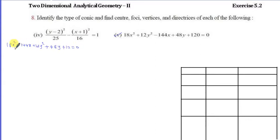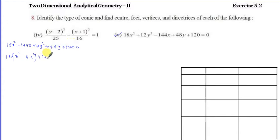We apply complete the square. The coefficient of x² is 18. We factor out 18 from the x terms, giving x² minus 8x. We then factor out 12 from the y terms, giving y² minus 4y. We will add 120 to the right side.